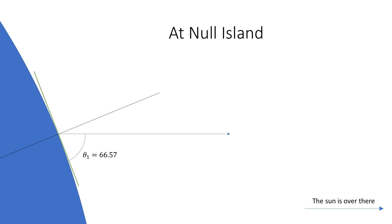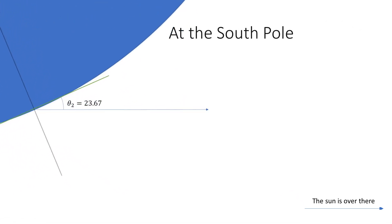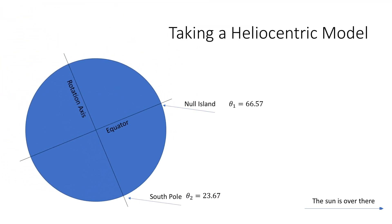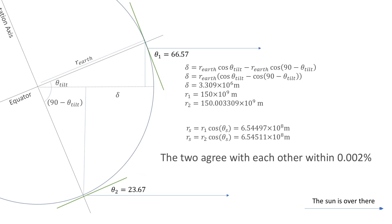So firstly we look at Null Island. Okay, we can draw a tangent line from the surface where we are standing. And we see that the elevation angle is 66.57 degrees. Now we can repeat the same thing for the south pole. And we see that the elevation angle is 23.67 degrees. So we have those two values. And you'll notice actually that the lines connecting the points in the sun are roughly parallel.